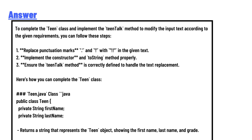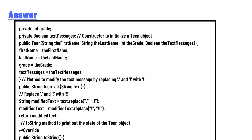In the Teen class in Java: public class Teen, with private String firstName, private String lastName, private int grade, and private boolean textMessage. The constructor initializes the Teen object: public Teen, string firstName, string lastName, int grade, boolean textMessage — sets this.firstName, this.lastName, this.grade, this.textMessage. The teenTalk method modifies the text message by replacing punctuation.